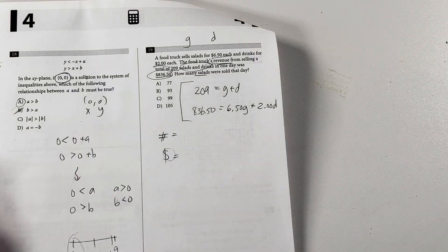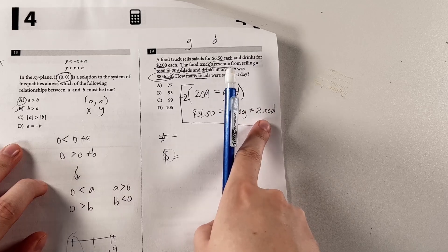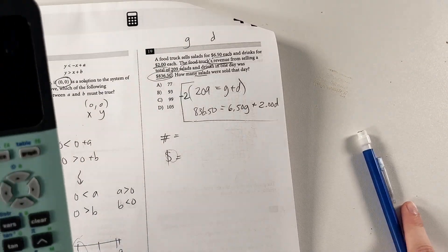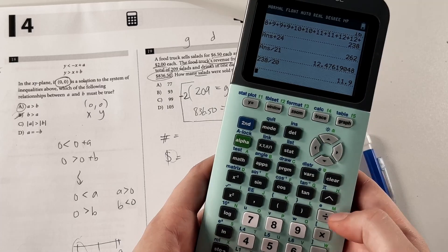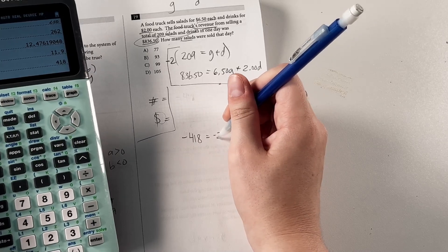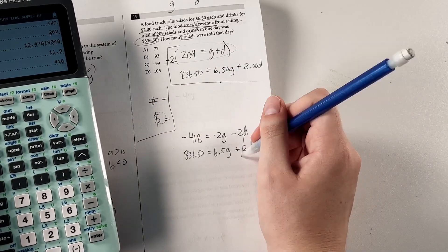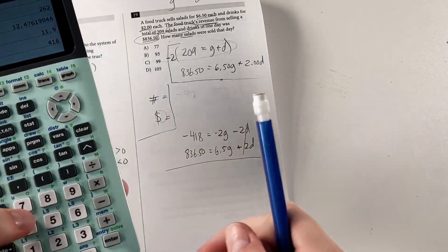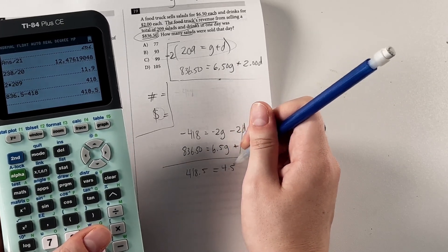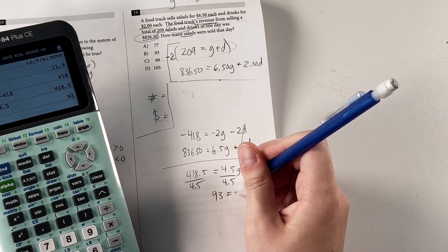And you guys know I love using elimination. Honestly, in this case, substitution might be easier. But we could also just multiply this equation by a negative 2 to get that negative 2d and positive 2d to cancel out. Then that would leave us with the number of salads, which is what we want. Here's where our calculator comes in real handy, because I'm not going to do that mental math. I'm going to mess it up. So, 2 times 209, that's going to be 418. So negative 418 equals negative 2g minus 2d. That's this equation rewritten. And then this one stays the same. Alright, so these two cancel out. Then we want to do this minus this. So we get 418.5 equals, and then 6.5 minus 2 is 4.5g. Then divide the whole thing by 4.5, and we get 93 salads. Yay, I love that. It's a nice, easy number.